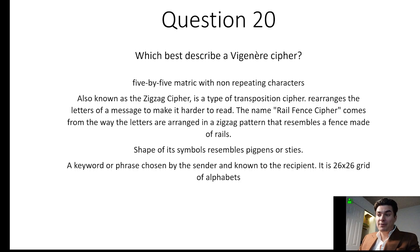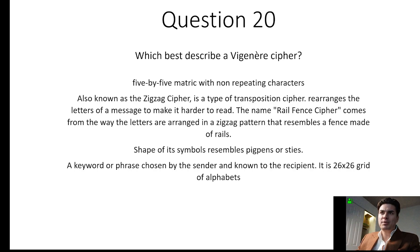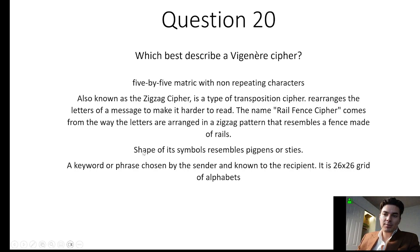Which best describes a Vigenère cipher? A keyword or phrase chosen by the sender and known to the recipient, using a 26-by-26 grid of alphabets. A 5x5 matrix with non-repeating characters would be the playfair cipher. The rail fence cipher, also known as a zigzag cipher, is a type of transposition cipher that rearranges letters in a zigzag pattern resembling a fence made of rails. Finally, the pig pen cipher gets its name from the fact that the shape of its symbols resembles pig pens or styes.